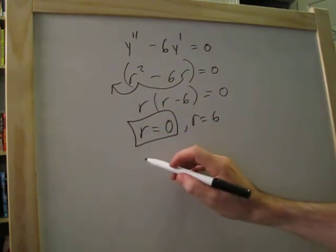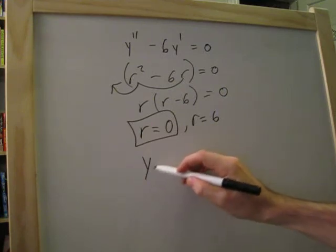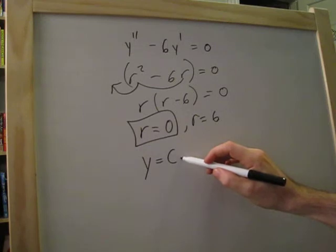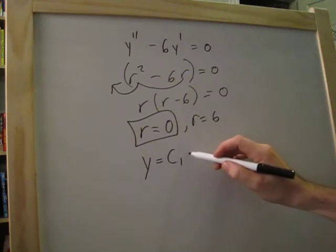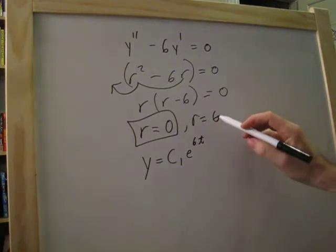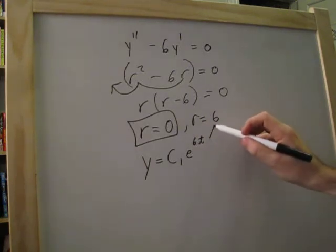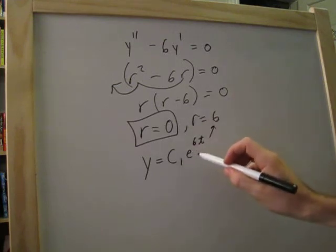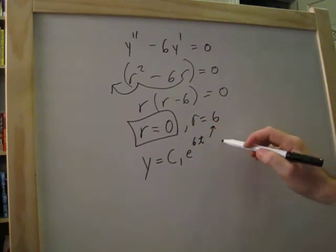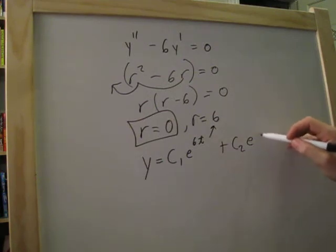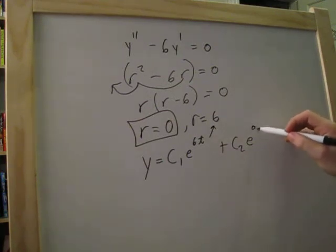In this case, our general solution will be y equals c1 times e to the 6t, and that is directly from that. That's pretty standard. So what do we do with this? We can account for that as plus c2 times e to the 0t.